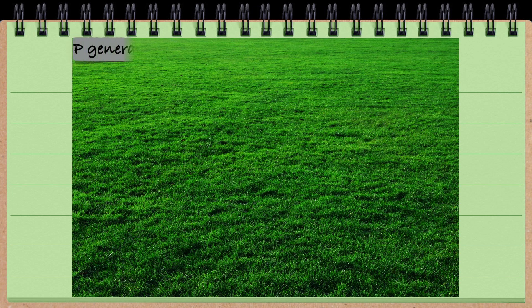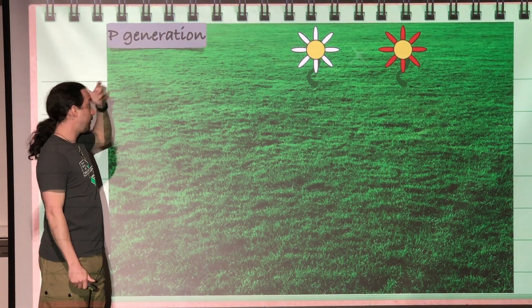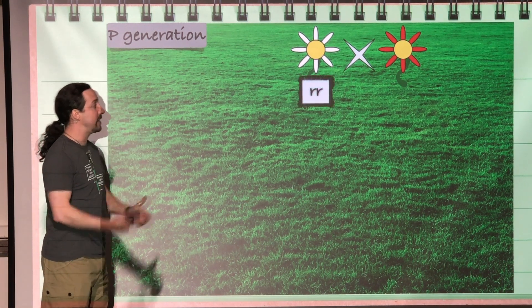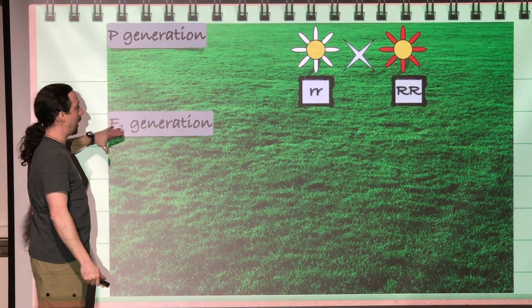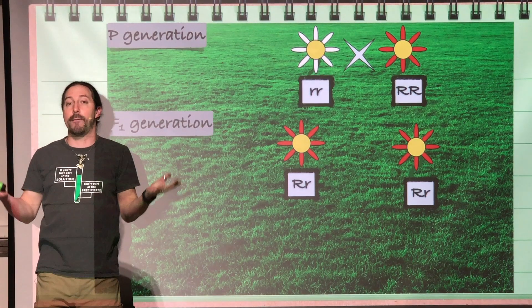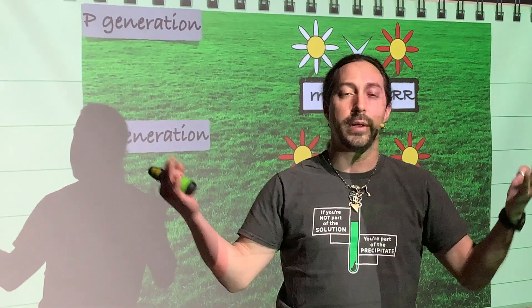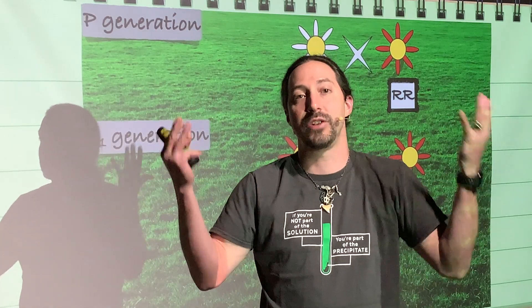So if we look at our P generation where we had a white flower and a red flower — true breeding flowers, meaning they're homozygous for their specific trait — and we were to cross these, we would get our F1 generation. We would have only one option as our offspring: red flowers that are heterozygous. That's the only option for the F1 generation because crossing a homozygous dominant with a homozygous recessive always produces heterozygous offspring.